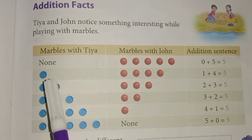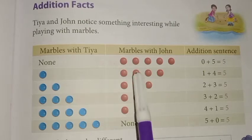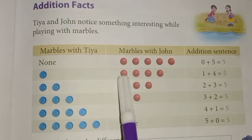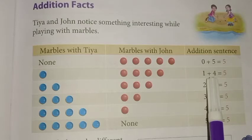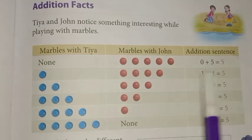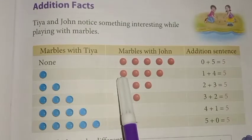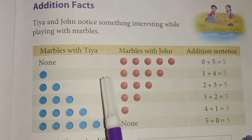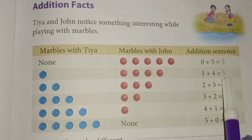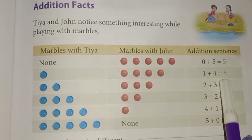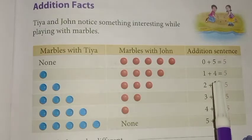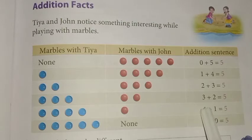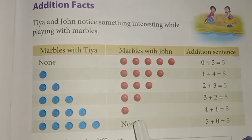Same way, next one: in the first column Ti has only one marble and John has four marbles. So we can add one plus four equal to five. One, two, three, four, five — one plus four equal to five. We can make an addition sentence. The answer is the same and the question will differ, so you can also make some more questions.